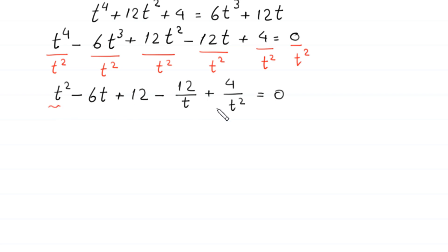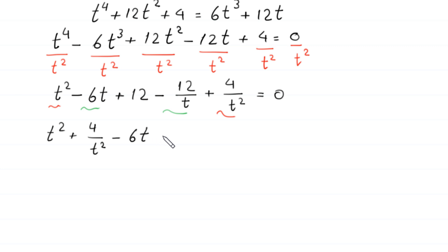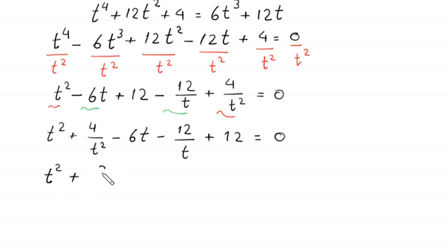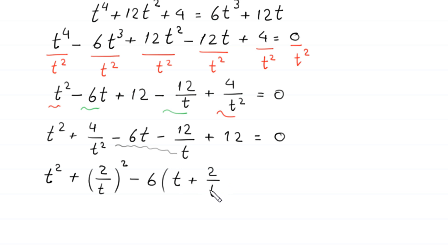Now we combine the terms with t squared and the terms with t. This becomes t squared plus 4 over t squared, minus 6 times t minus 12 over t, plus 12 is equal to 0. We can factor out negative 6 from the terms negative 6t minus 12 over t, giving negative 6 times t plus 2 over t.